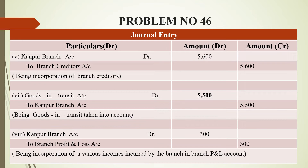The next one is goods in transit account. Goods in transit is $5,500. That is the transaction we have to include in the branch account. The journal entry is: goods in transit account debited to branch account.